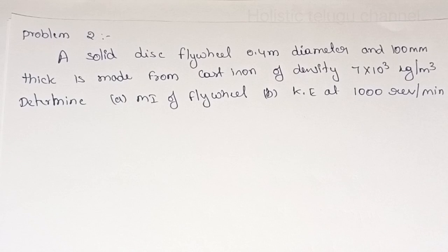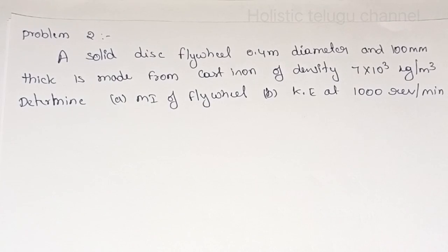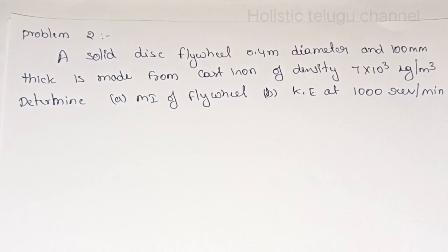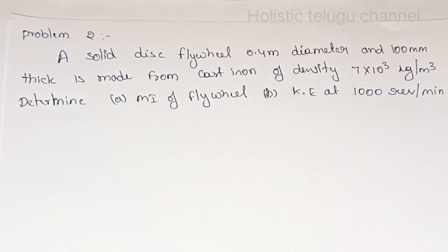We have to try flywheel. Flywheel is related to the second problem. The problem is that the solid disk flywheel is 0.5 meter diameter and 100 mm thick, made from cast iron of density 7 x 10 to the power of 3 kg per meter cube. Determine the moment of inertia of the flywheel and kinetic energy at 1000 revolutions per minute.